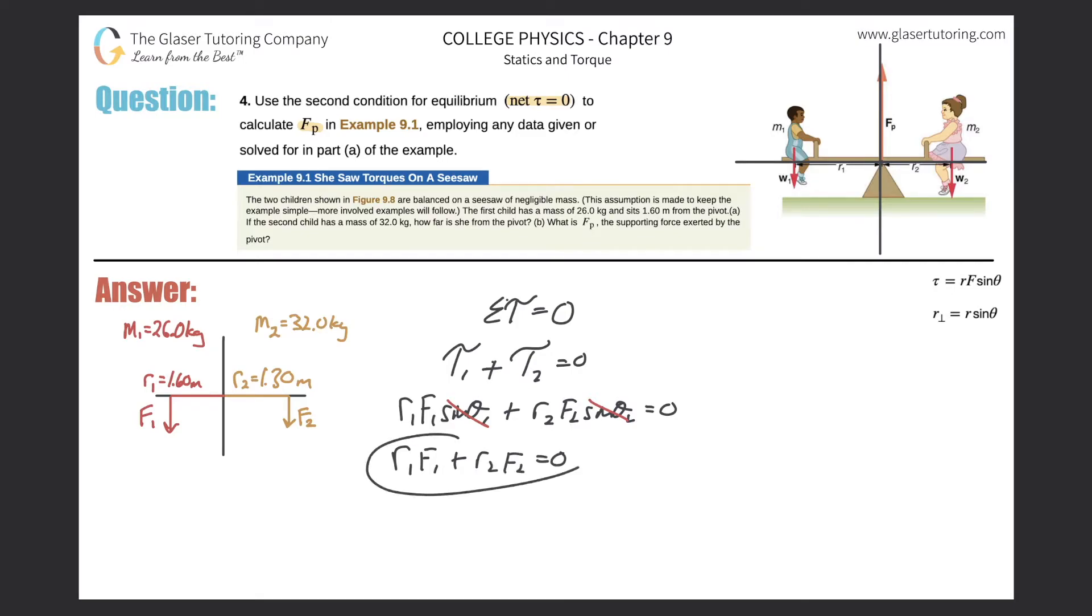Now here's the thing, in this formula, do you see F sub P yet? No, we do not. So what we need to do is somehow we need to come up with a formula that involves F sub P and some of the variables in this equation.